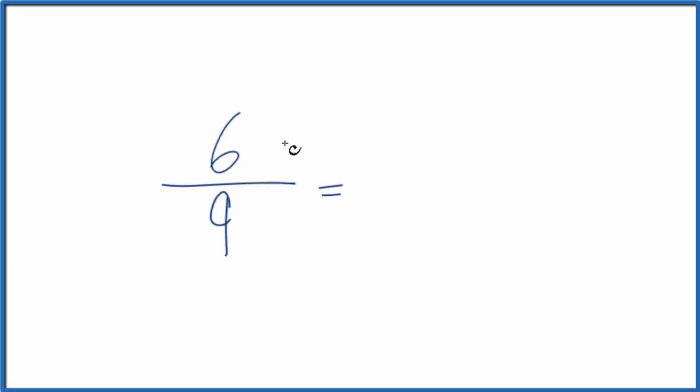Let's write several equivalent fractions for 6 ninths. That's 6 over 9. And what we're really trying to do here is find another fraction that has the same value, but different denominators and numerators.